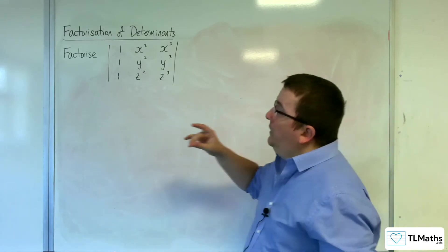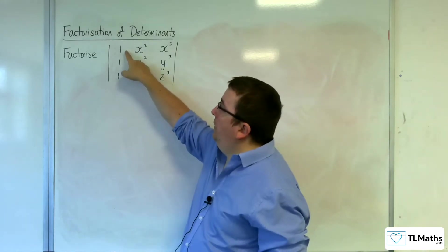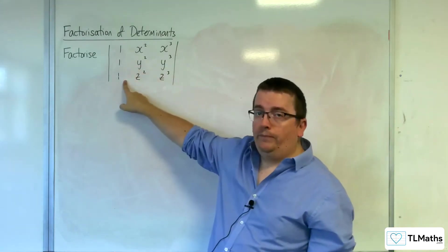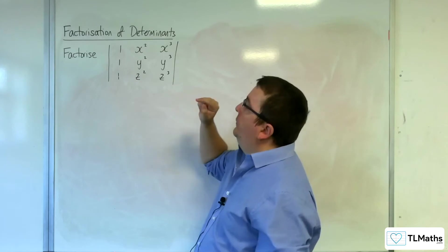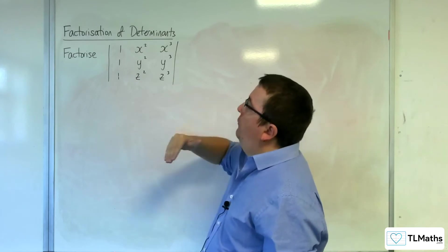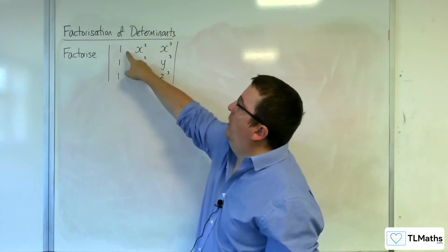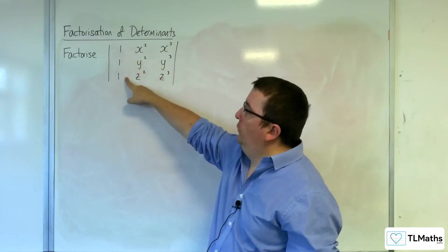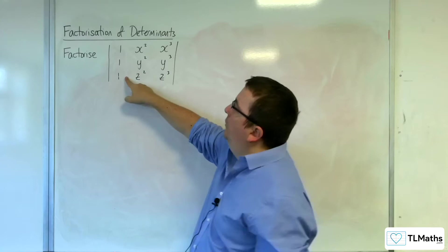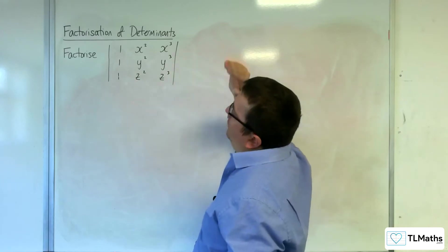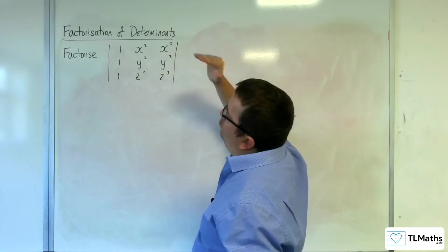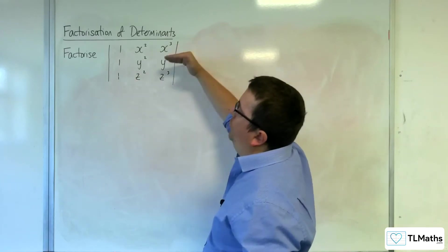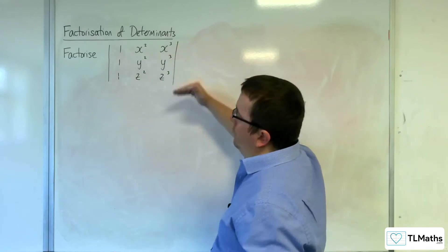The first thing to notice is that the left-hand column is all 1s. So if I can get 1, 0, 0, that would be very useful. What I'm going to do is subtract row 1 away from row 2 and row 3.